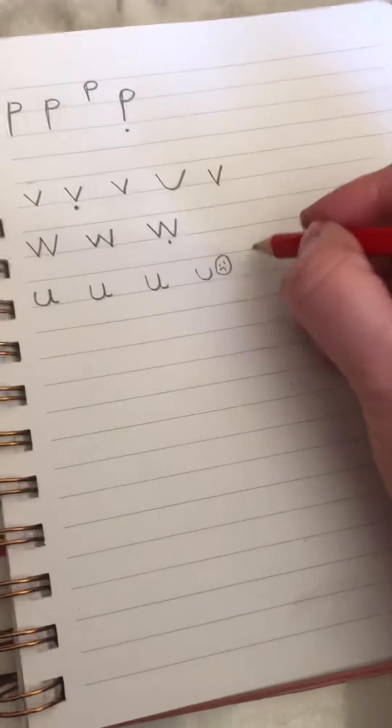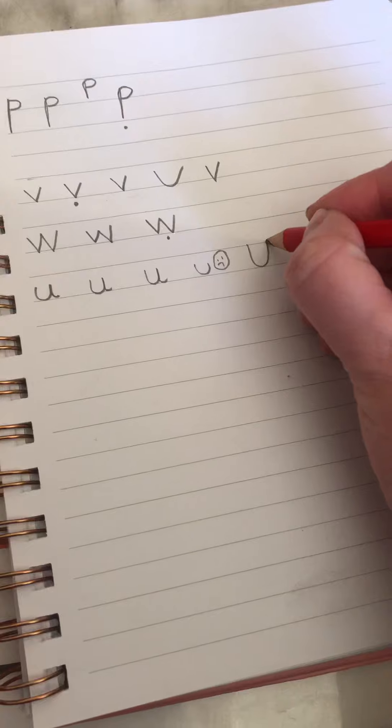Make sure as well that they don't start on the top line because that's far too big, isn't it? It has to sit in the middle. So down the umbrella, up the umbrella, down to the puddle. Just like that. So that's how you do the letter U.